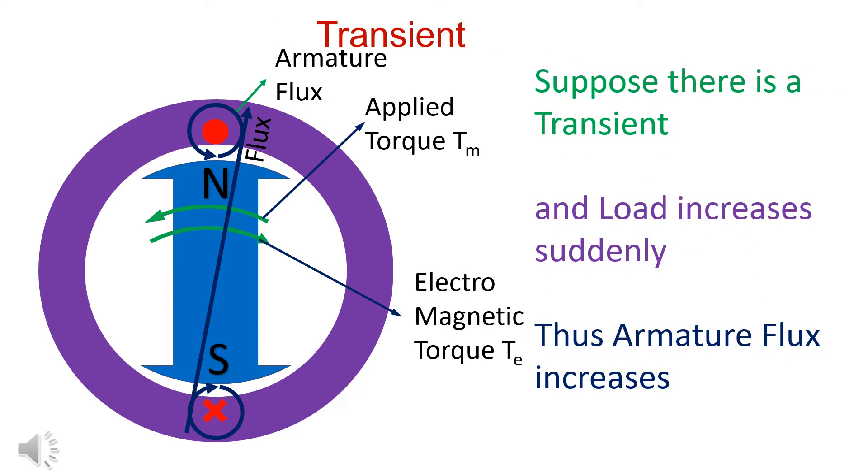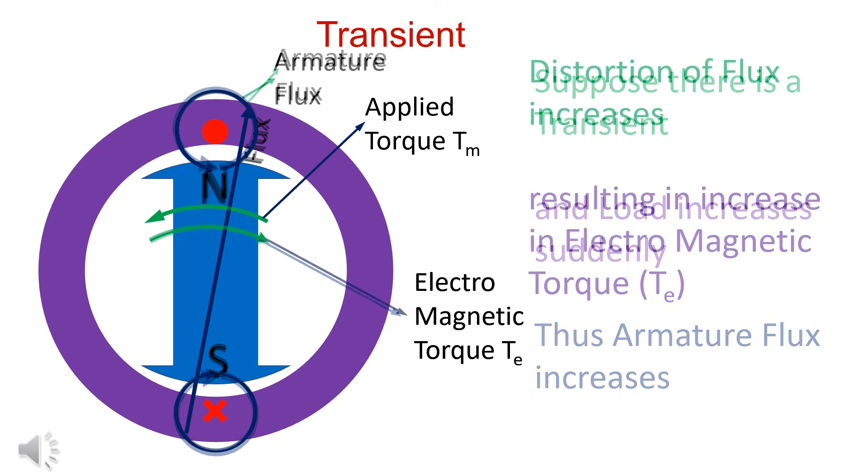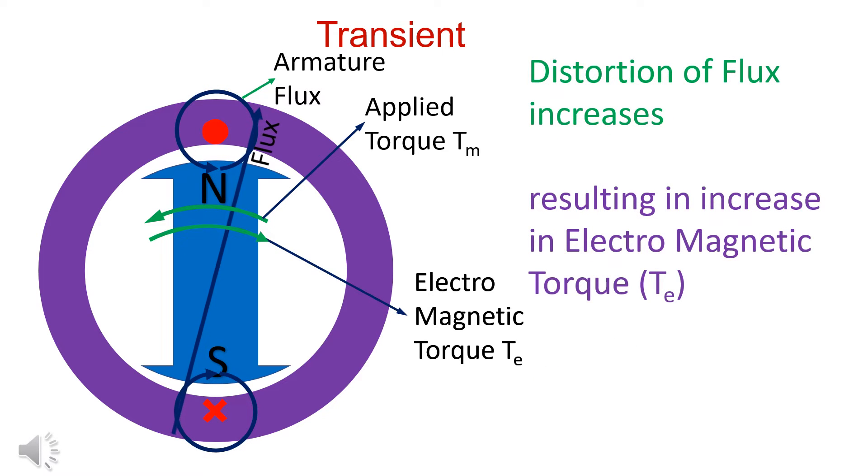Let us see what happens during transient. Transient means large change in load for a very short time. Suppose there is a sudden increase in load. Armature flux increases. The flux is distorted more and hence, electromagnetic torque Te increases.